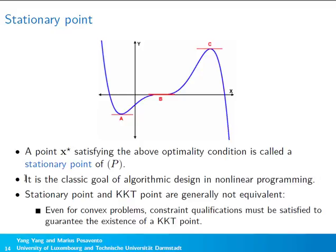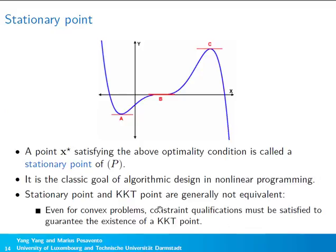The stationary point is the classical goal of algorithmic design in nonlinear programming, though care must be taken to avoid converging to a local maximum. Also, a stationary point and a KKT point are generally not equivalent, even for convex problems, because a KKT point does not always exist — some constraint qualifications must be satisfied to guarantee its existence.